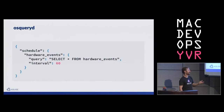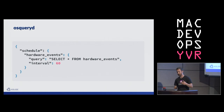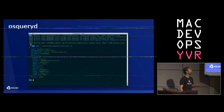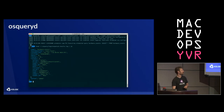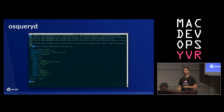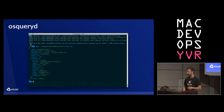Here's an example of a config working with one of these event-based tables. This query runs every 60 seconds and selects from the hardware_events table — that's USB devices plugging and unplugging. In this example I plugged and unplugged my dongle, which was a USB 3 hub, and this happened before the query ever ran. When the query ran, this result was cached and returned to us. So we don't miss things just because our queries are running every minute.